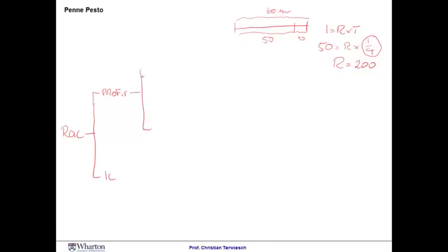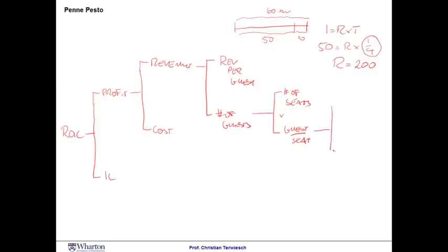Profits is nothing but revenue minus cost. And revenue is nothing but the revenue per guest times the number of guests per night. The number of guests per night are simply the number of seats that we have available, 50 as we just saw, times the guests per seat, which are driven by the speed with which we turn the seats. This in turn is driven really then by the time that the guest is in the seat or at the table plus the 10 minutes of cleaning time.